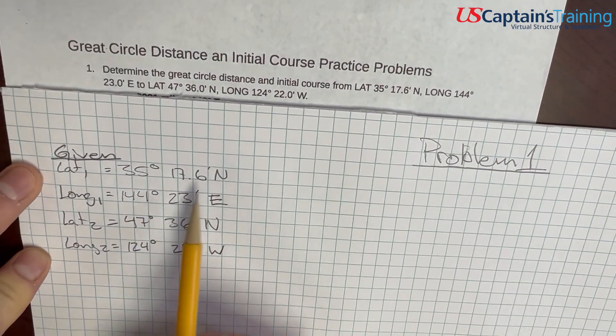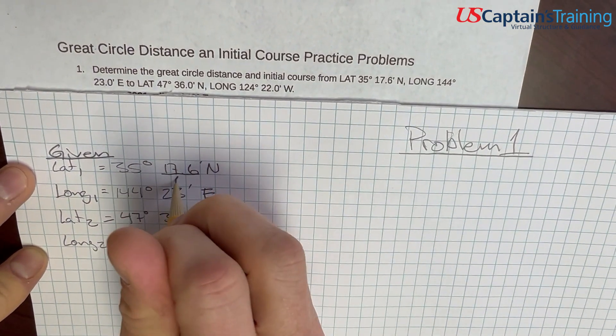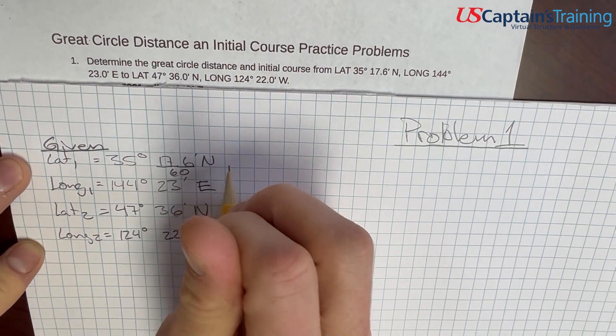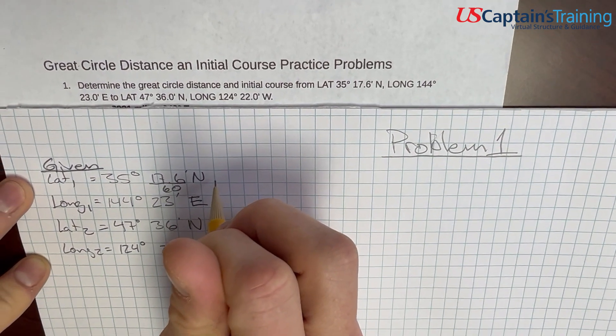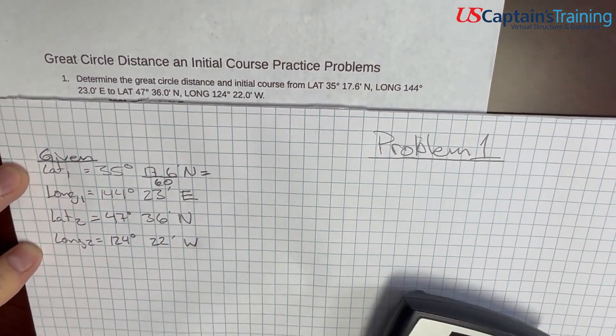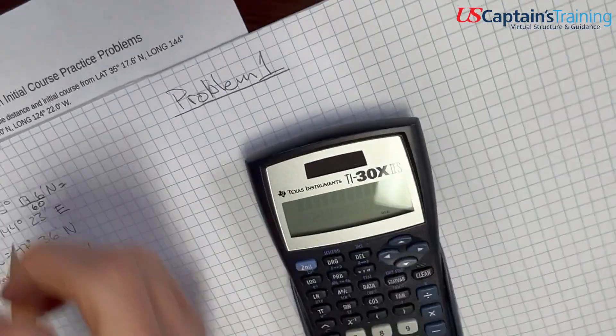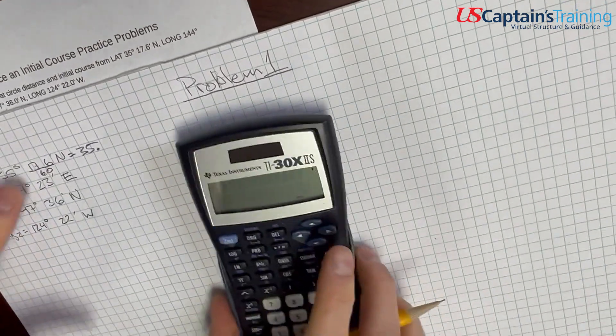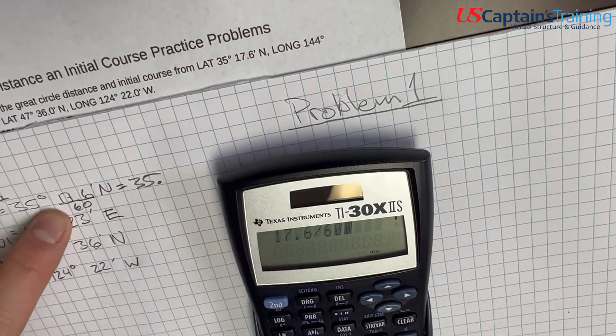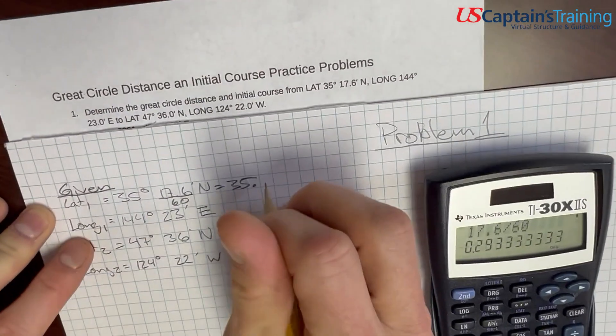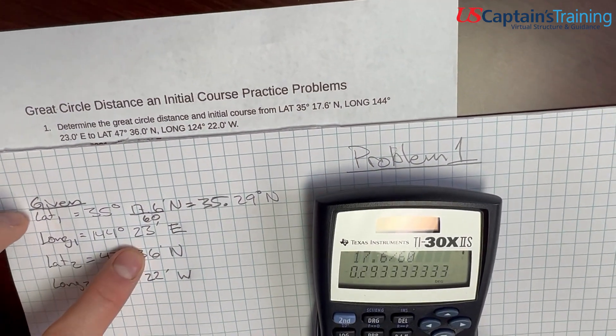So, during these problems, we can't have minutes anywhere. So, the first thing I'm going to do is just convert all of these to degrees only. If you divide the minutes by 60, you get degrees. So, bring out the calculator. You're going to need it for these problems.